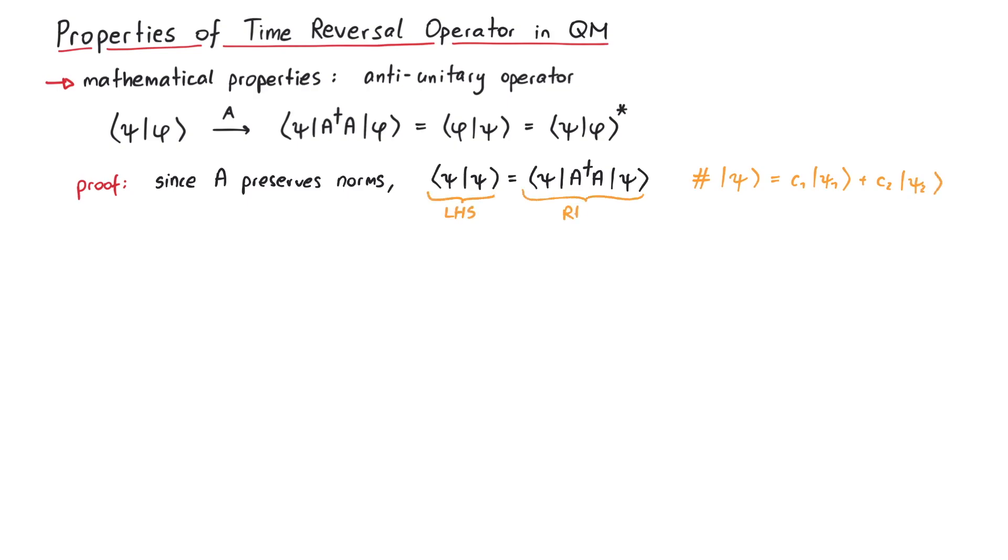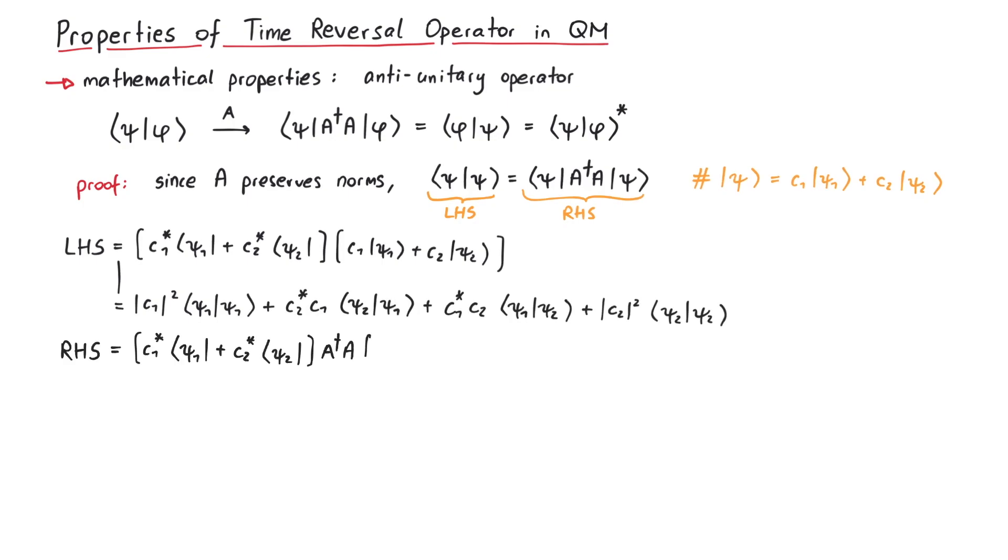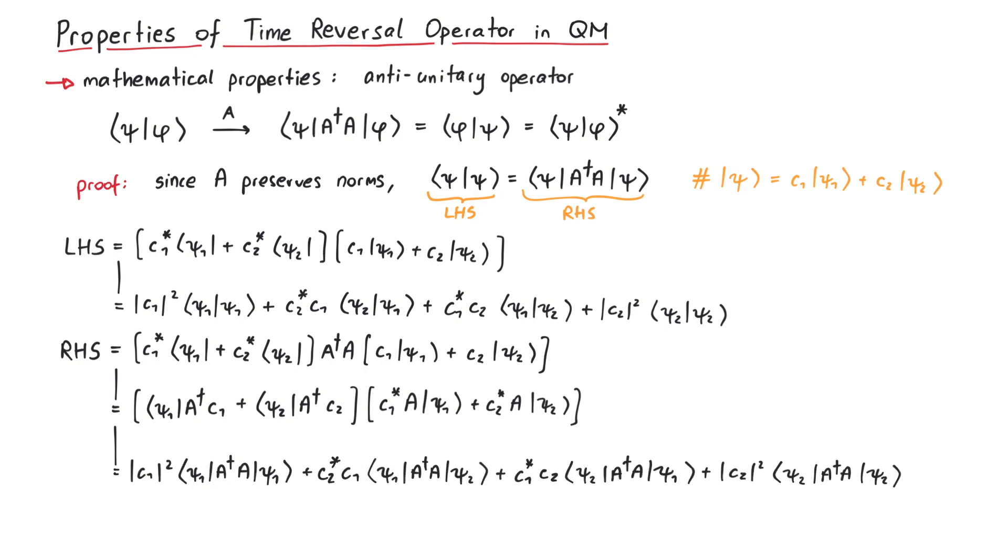In order to continue, let us calculate the left-hand and right-hand side of this equation separately. The left-hand side is not too difficult, we just have to multiply the terms in the brackets. But for the right-hand side, we have to keep in mind that A is anti-linear, so the coefficients get complex conjugated along the way. The result looks similar to before, but it's not exactly the same. Because we used arbitrary coefficients in the superposition of psi 1 and psi 2, the left-hand and right-hand side must be equal for any values of c1 and c2.